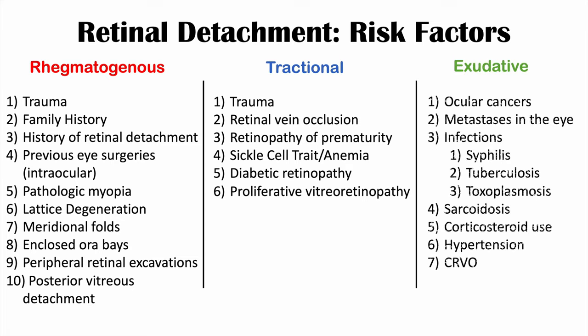Risk factors for exudative retinal detachment involve conditions that cause inflammation underneath the retina. These include ocular cancers, extraocular cancer metastases to the eye, infections such as syphilis, tuberculosis, and toxoplasmosis, sarcoidosis, corticosteroid use, hypertension, and central retinal vein occlusion (CRVO).